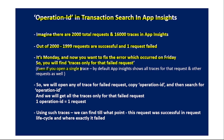By default, even if you open a single trace for a specific request, App Insights shows traces for that request as well as other requests. So what we will do is open any trace for that failed request, copy the Operation ID, and search based on that Operation ID. Thus we get all the traces only for that failed request. In simple words, one Operation ID equals one request.